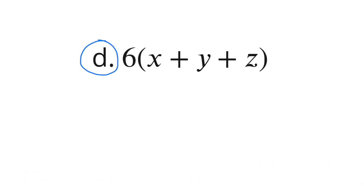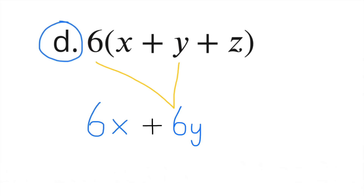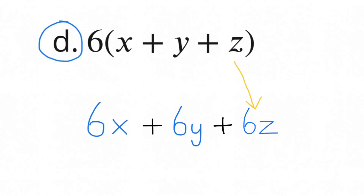D. 6 times (x plus y plus z). 6 times x is 6x, bring down the plus sign, 6 times y is 6y, bring down the next plus sign, and 6 times z is 6z. An equivalent expression for D would be 6x plus 6y plus 6z.